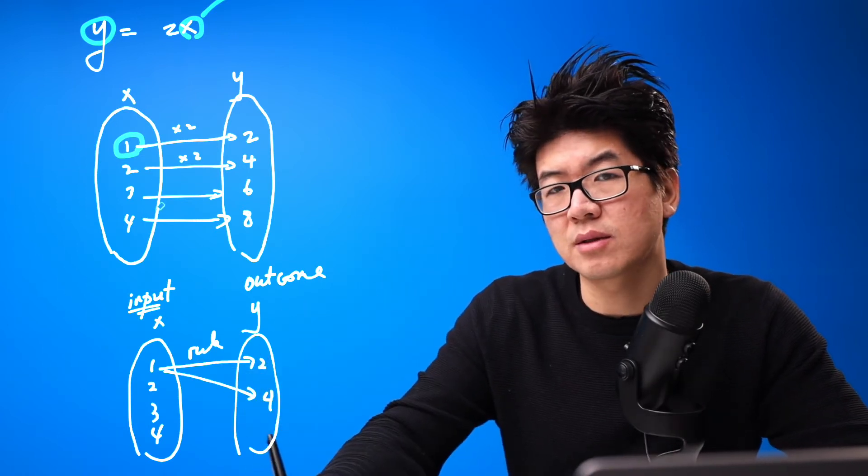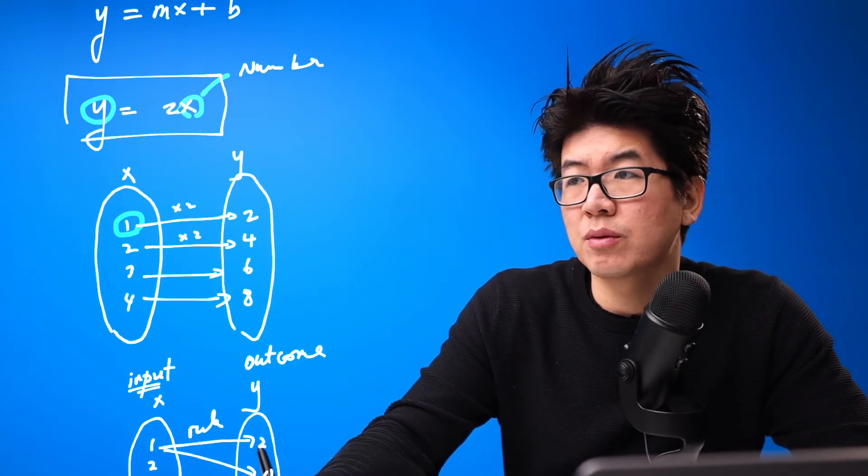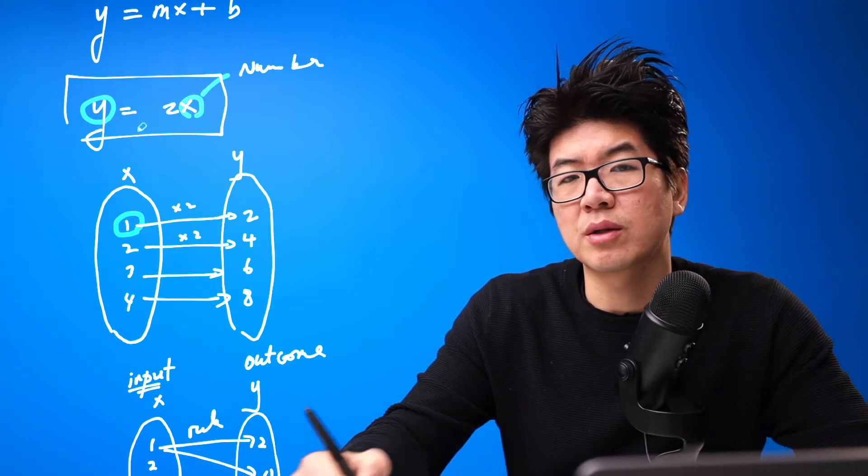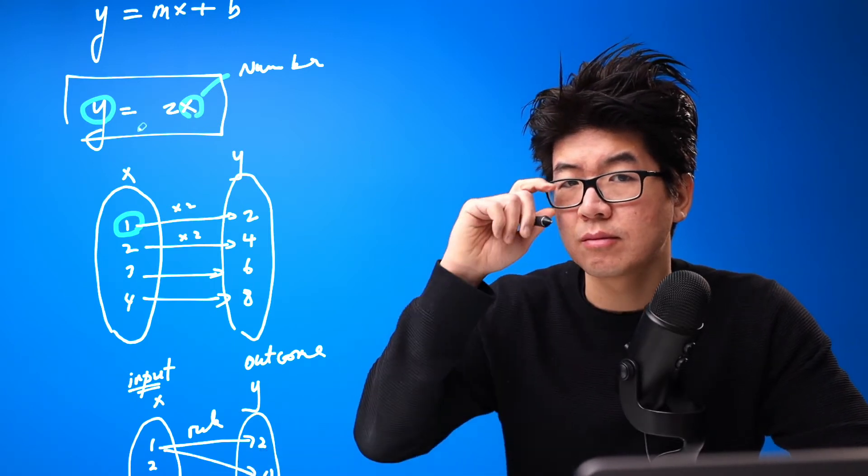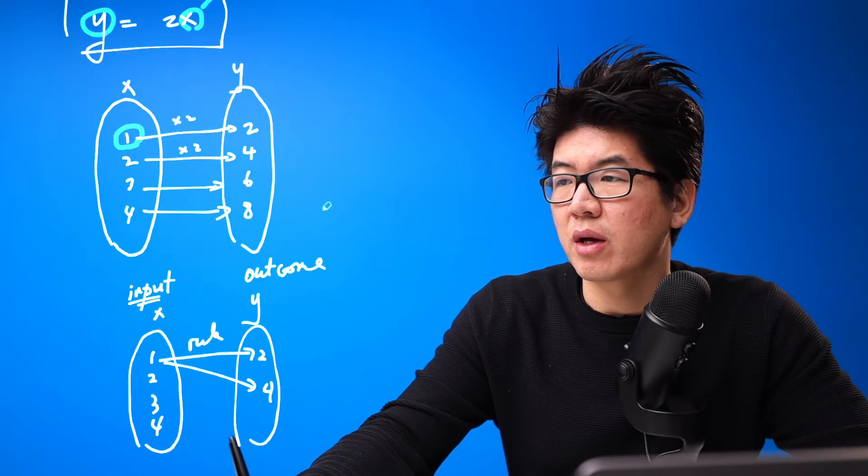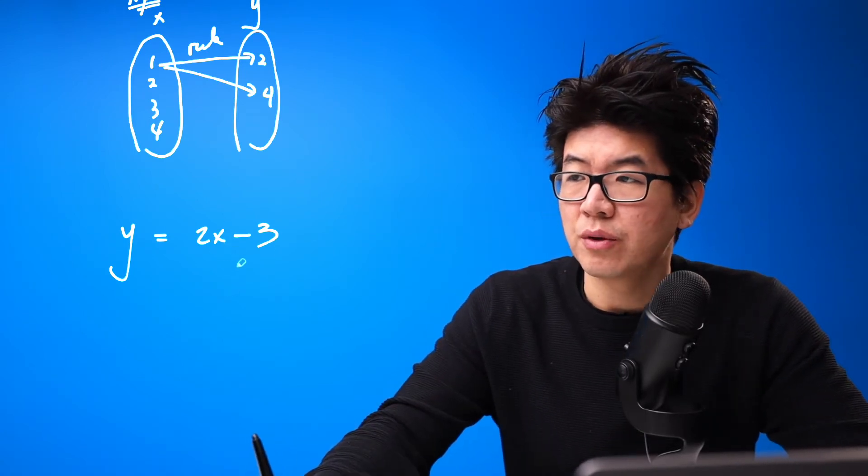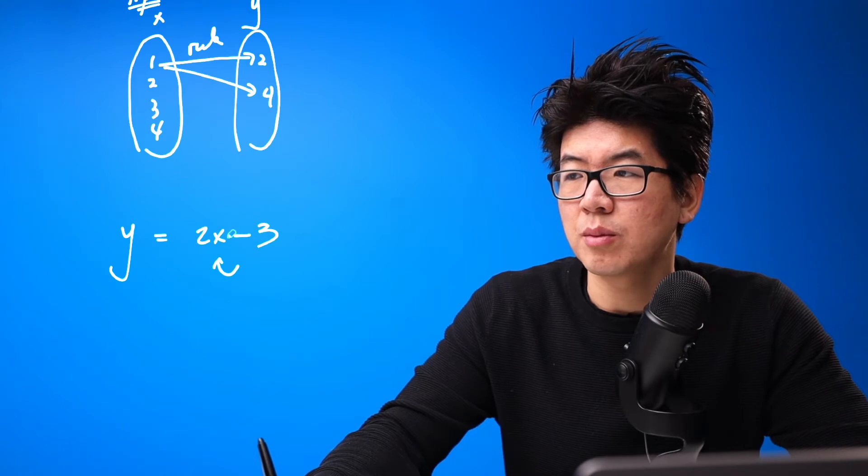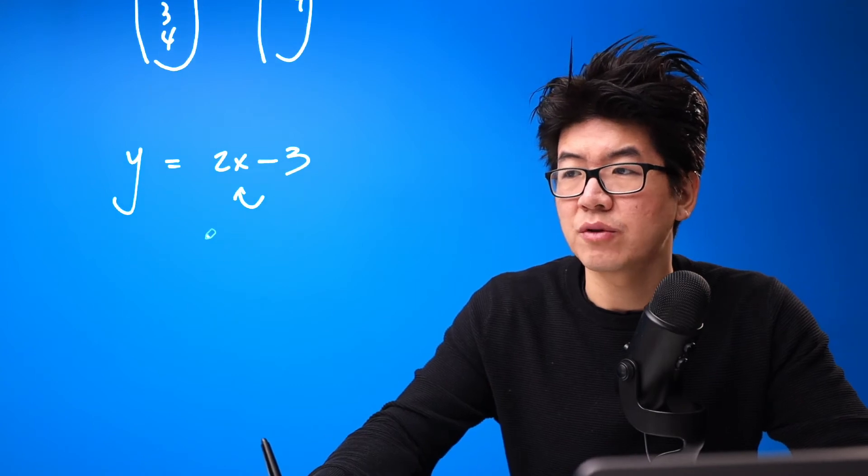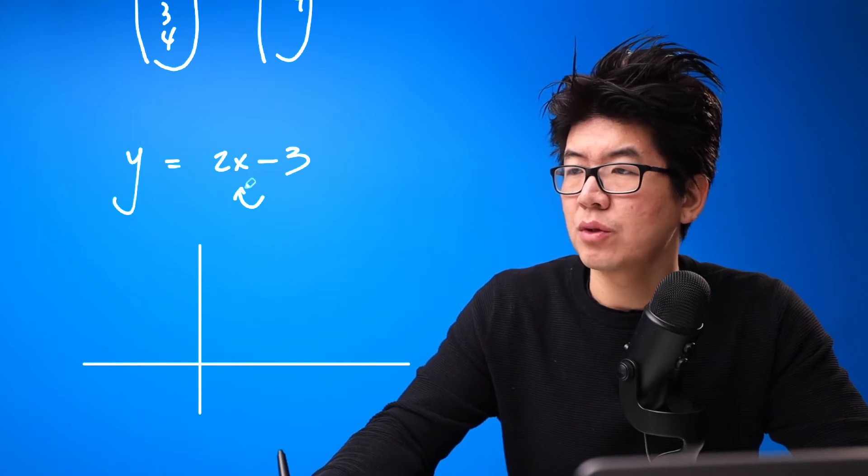You apply a rule to it, and if the result to any of the input is two different outcomes, it's not a function. It has to be one, like this example. Is it possible for us to double a number to get two different outcomes? No. It's always going to be one unique value.